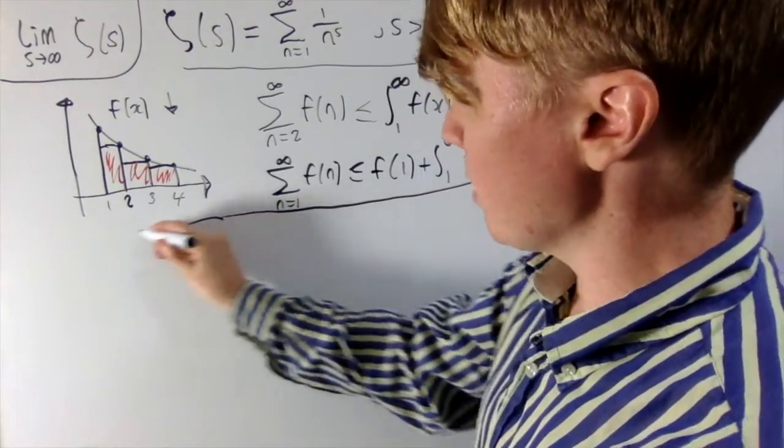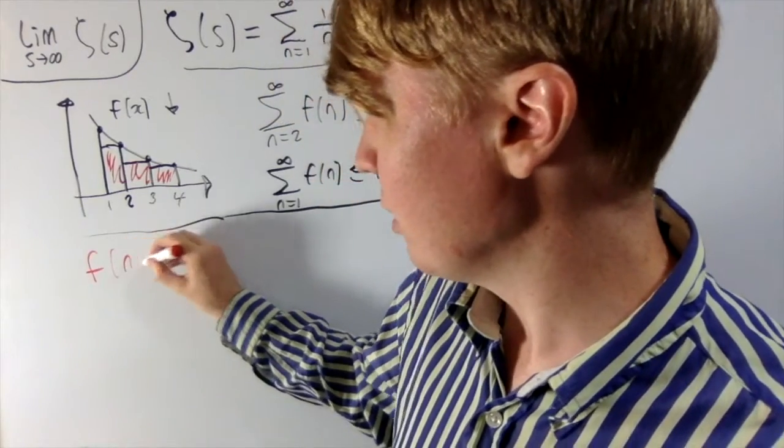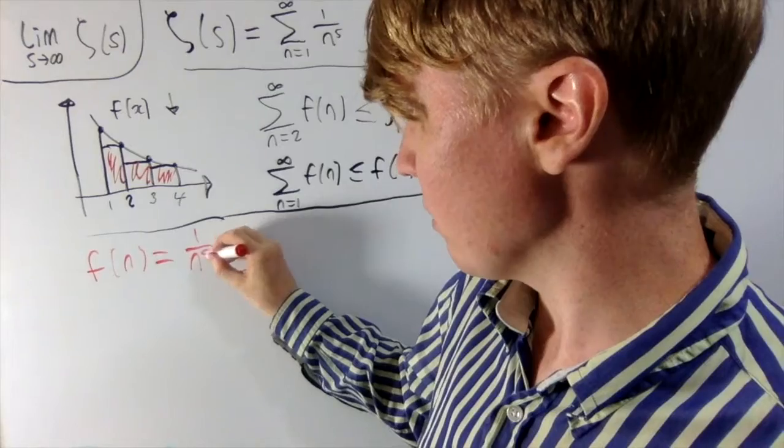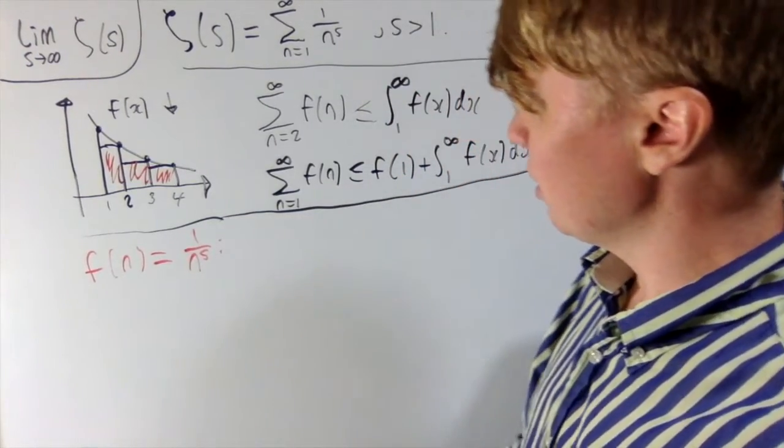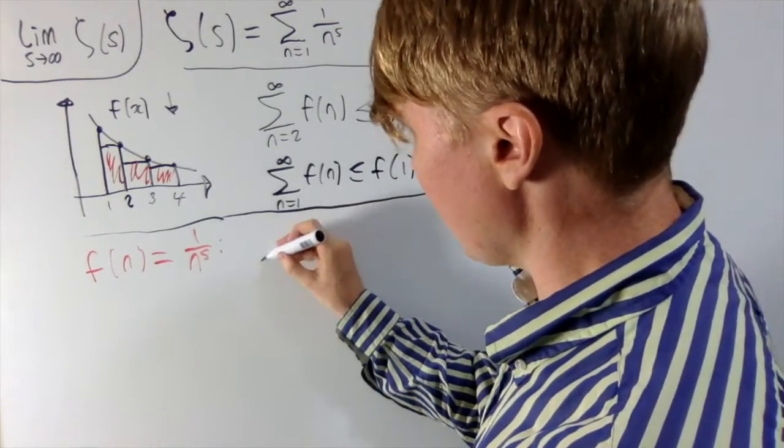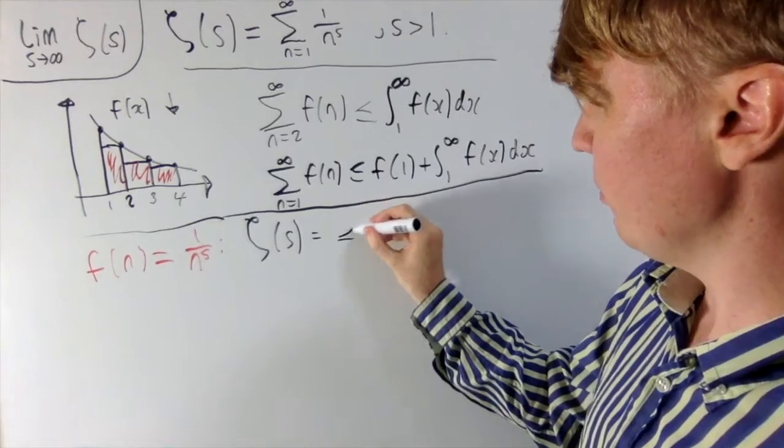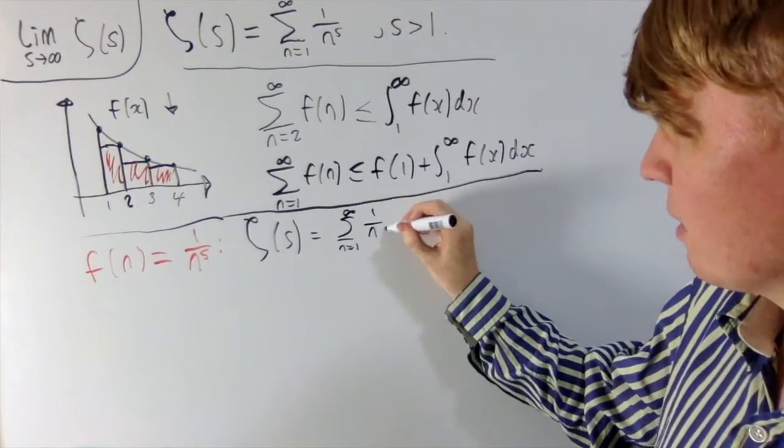And now we're going to apply this to the Riemann zeta function. So what is our f of n here? Well, f of n, this is 1 over n to the power of s, just for any value of s greater than 1. So what does this give us when we apply this bound? This tells us then that zeta of s, this is equal to the sum from n equals 1 to infinity, 1 over n to the s.